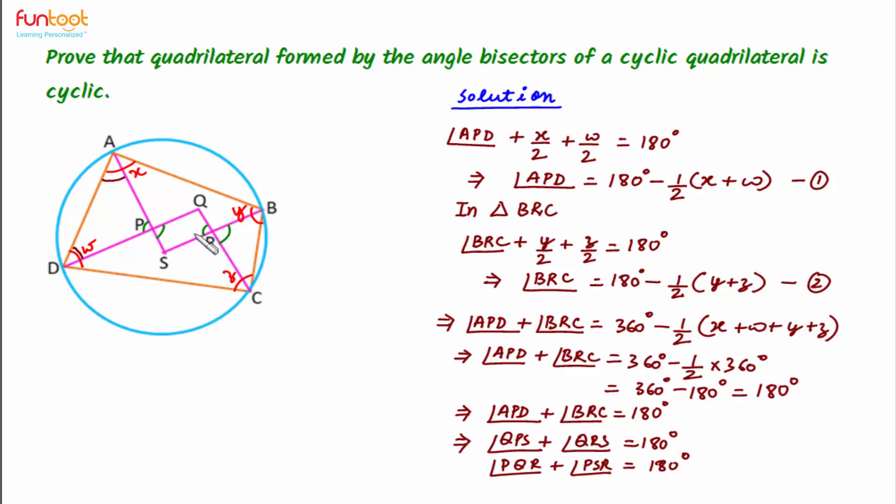So now we have in quadrilateral PQRS sum of opposite angles is 180 degrees. Therefore it is a cyclic quadrilateral.